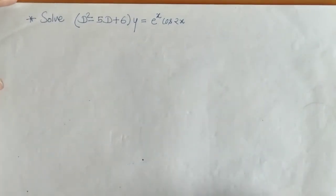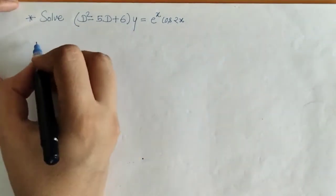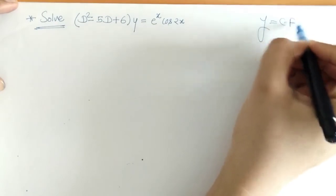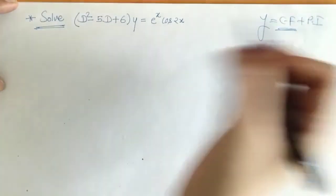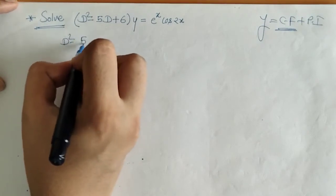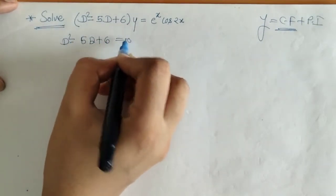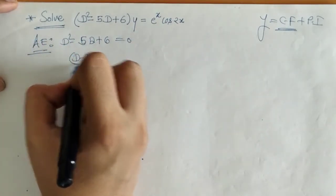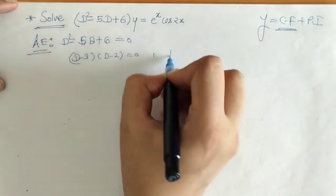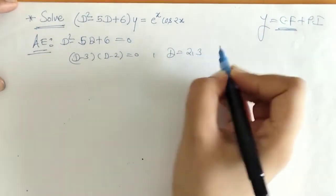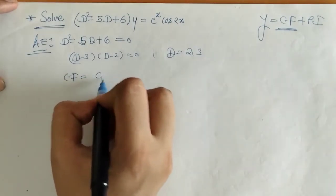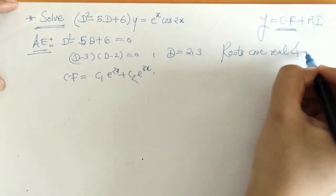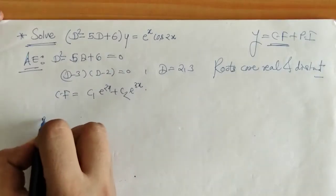Now let's look at the next example. Here we have to find the complete solution, that means CF and PI. For CF we need the auxiliary equation, and its roots are D equals 2 and 3. The CF is given accordingly — the roots are real and distinct. Now we have to find the PI.